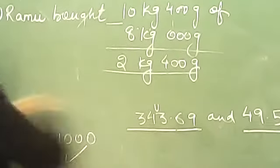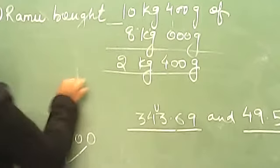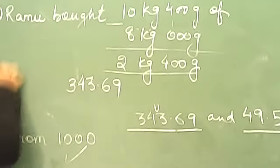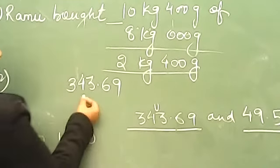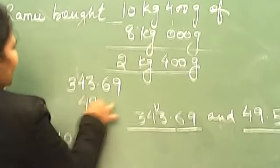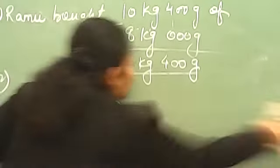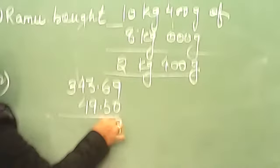So you will add 343.69, question number 2. 343.69 and 49.50. You will add first: 9, 1,